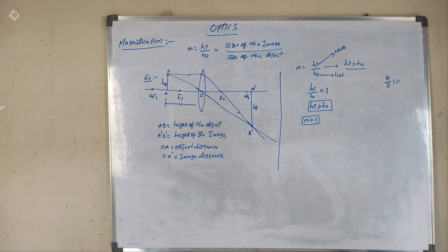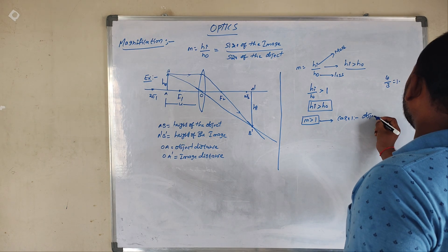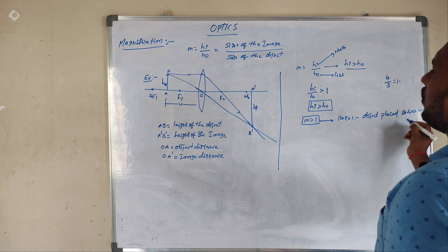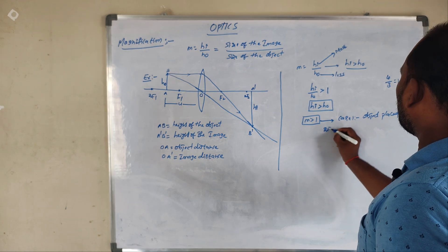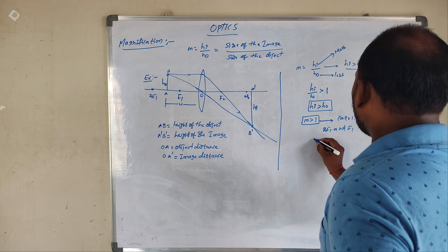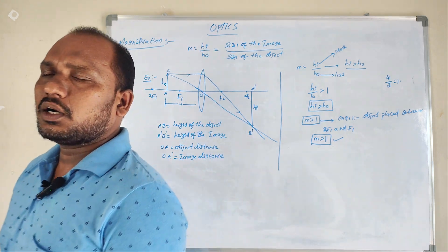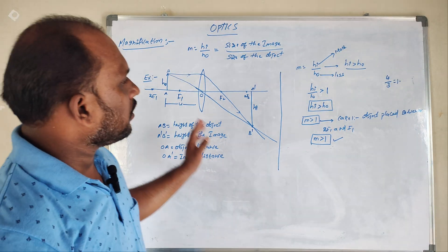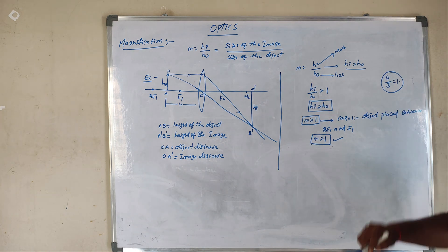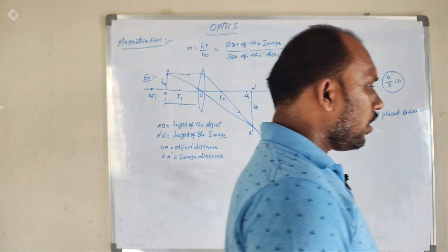So in the convex lens Case 1, when the object is placed between 2F1 and F1, the magnification is always greater than 1. HI is more value and H0 is less value, so M is always greater than 1. It will never be less than 1, it will never be equal to 1.